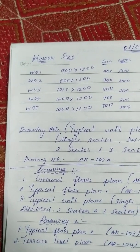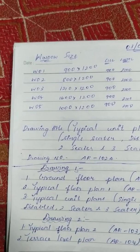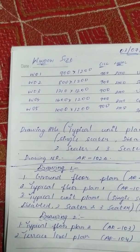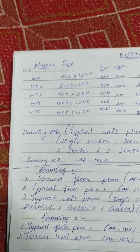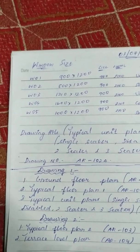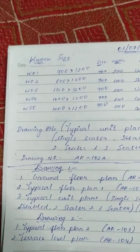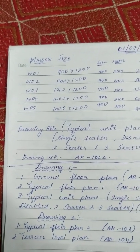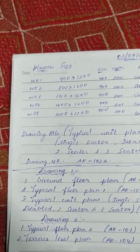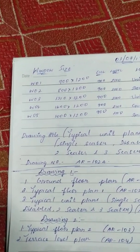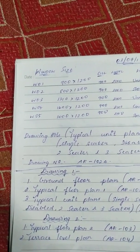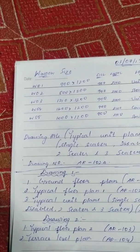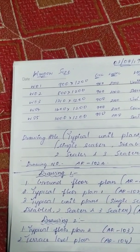Good morning guys. I am a civil engineer. It is very important to use residential buildings from 600 square feet to 10,000 square feet. If you want to use a very calm window size, you can use a very easy window size, but the size is also very customised.